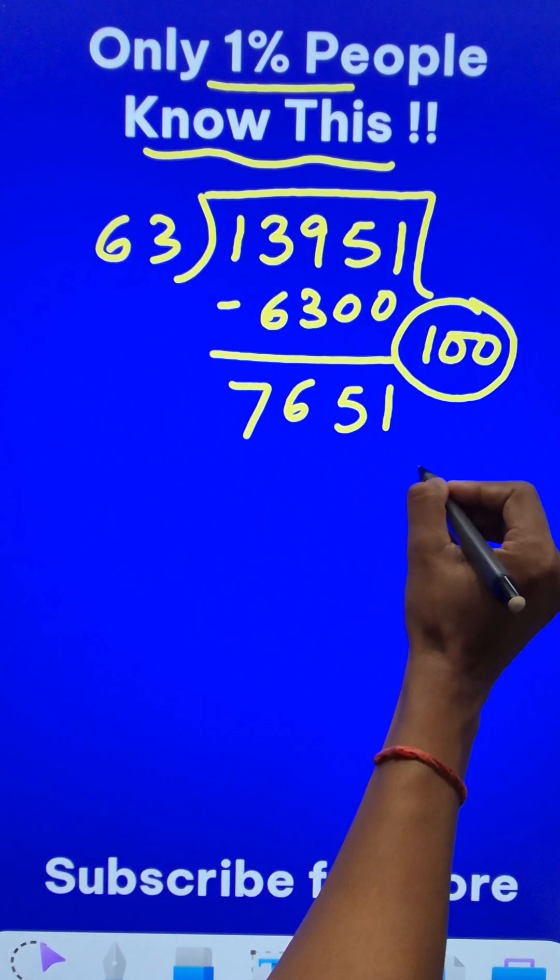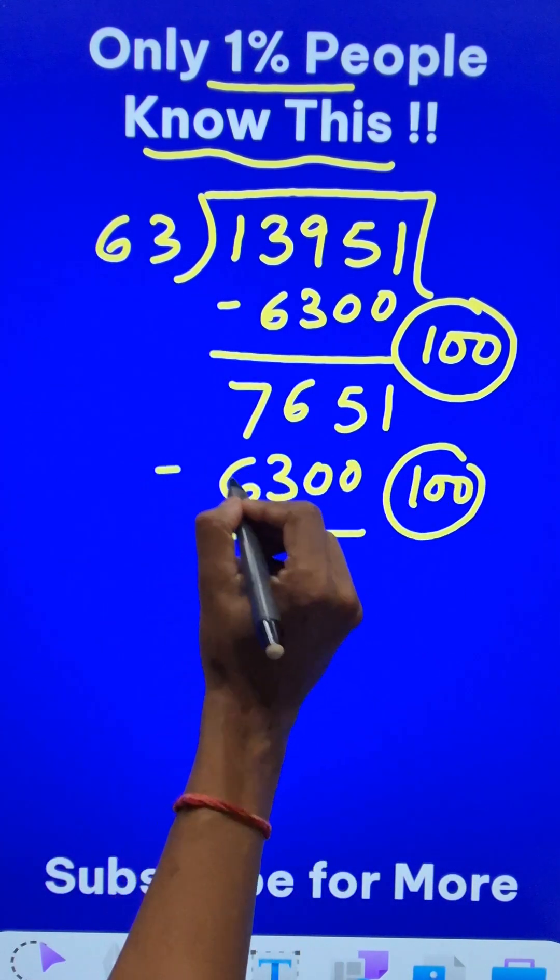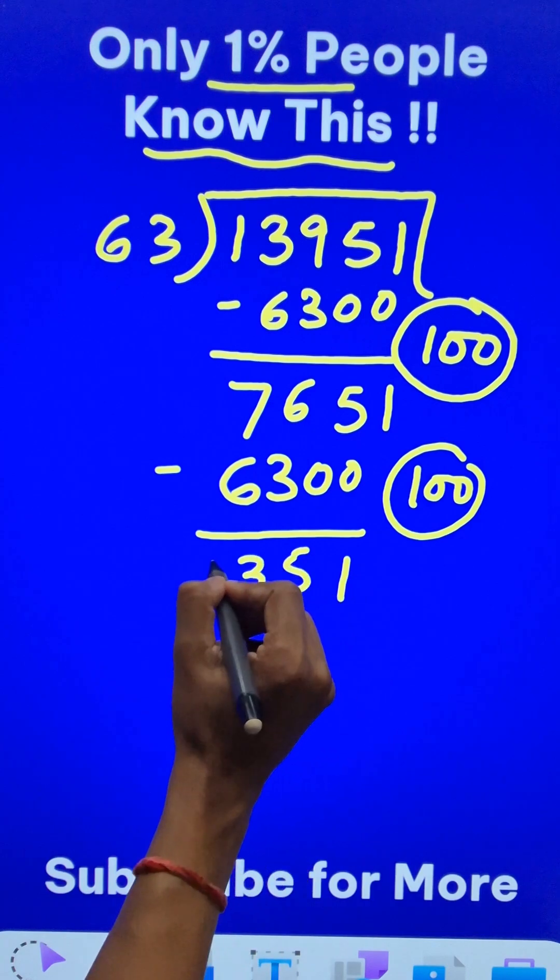Likewise, I will do it one more time like 100 times. So, 63 into 100 is 6,300 again and when I subtract them, I get 1351.